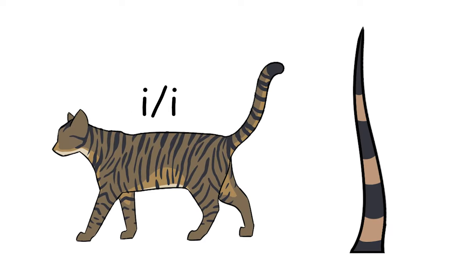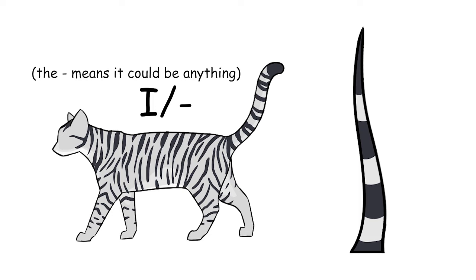I'm going to start us off with something relatively simple. The I locus, short for inhibitor. The recessive little i allele makes a normal, full-color cat. Having one or more copies of the dominant capital I inhibitor allele messes with the banding on a cat's hair.